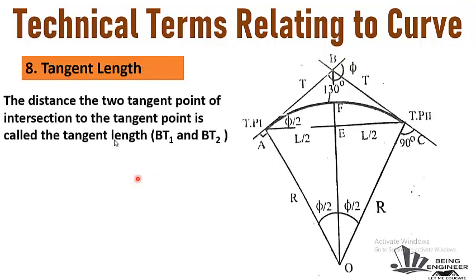The eighth term is tangent length. The distance between the tangent point and the point of intersection is called the tangent length. That is BT1 and BT2 — this length BT1 and BT2 is called the tangent length.